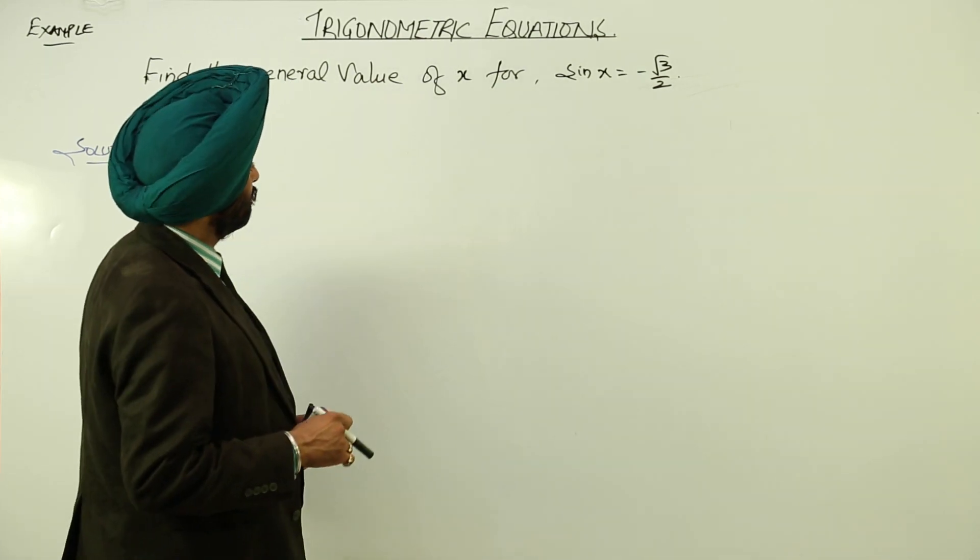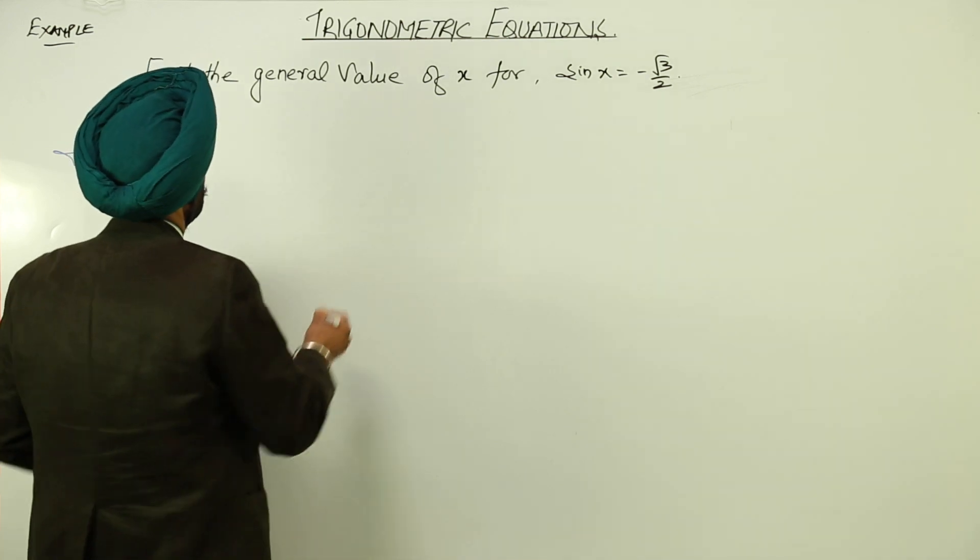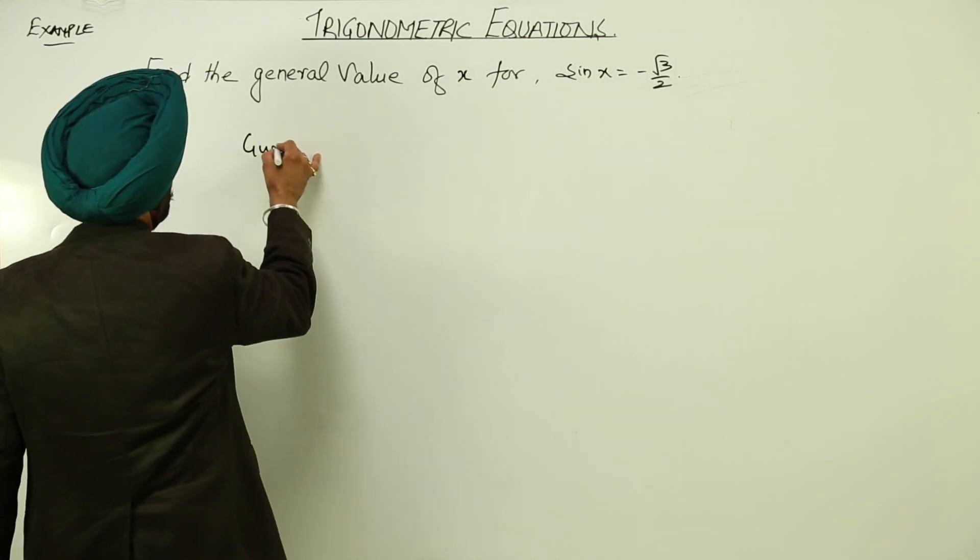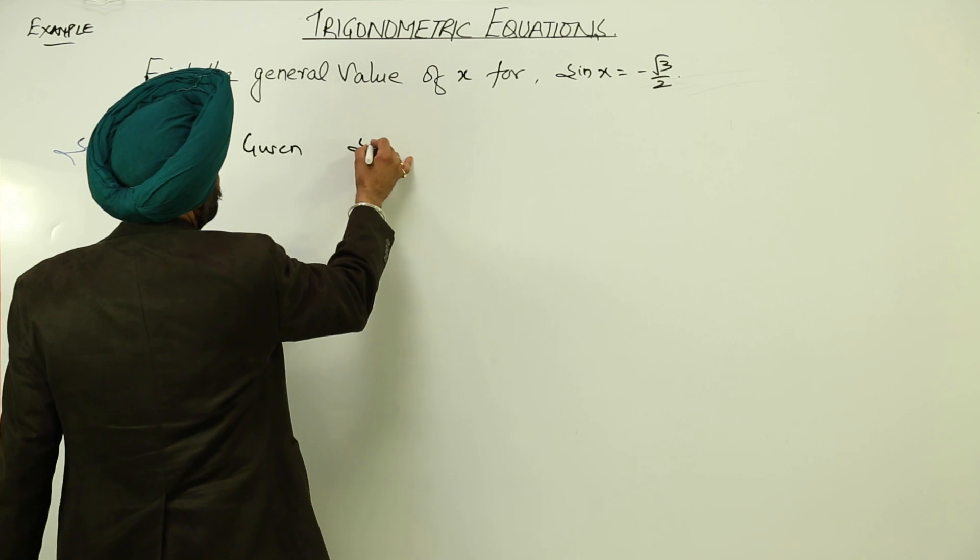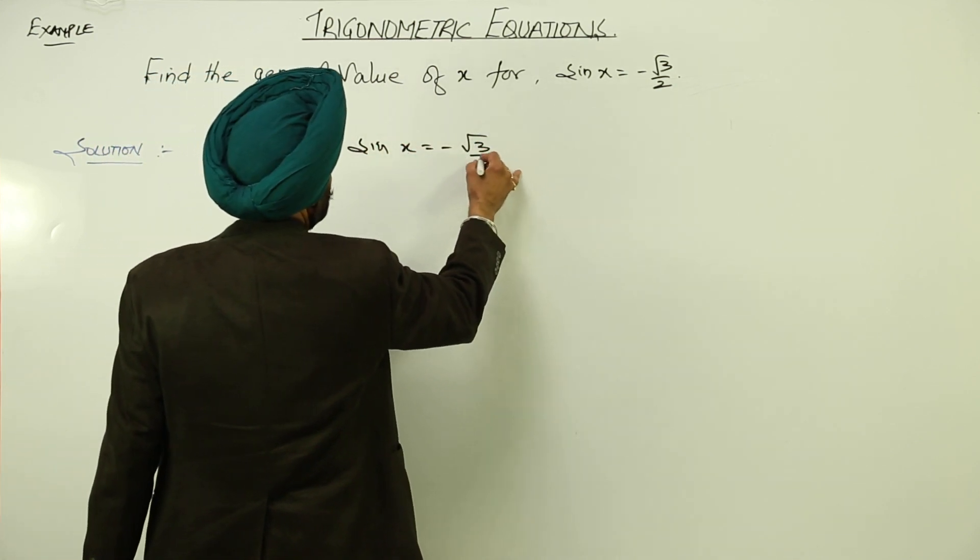Let's find the general value for sin x equals negative root 3 upon 2. Given sin x is equal to negative root 3 by 2.